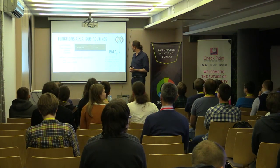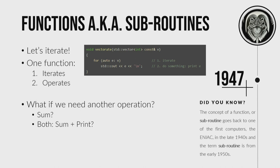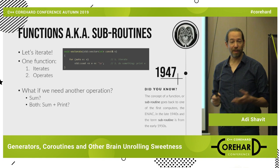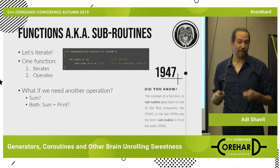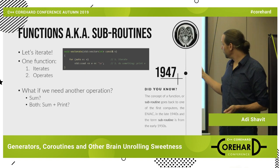Let's start at the beginning. Let's say we want to iterate over a sequence. We can write a simple function like vector8, and the function actually does two separate things: it iterates over each of the elements of the sequence, and then it performs some kind of operation on each of these elements — in this case, it prints them out to the standard output stream. If we wanted to do some other operation, like summing all the elements, we'd need different functions for each of these operations.